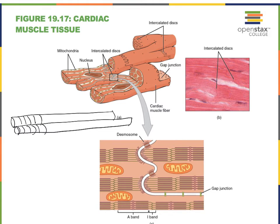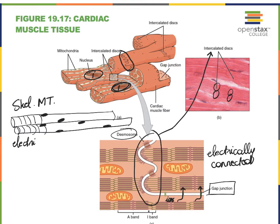Skeletal muscle cells on the other hand are said to be electrically isolated. That means if depolarization occurs in one skeletal muscle cell, that depolarization only spreads throughout that fiber — it will not make it into the next muscle fiber. This is one of the reasons why each and every skeletal muscle cell needed its own axonal terminal, because these cells are electrically separate. Not the case for heart muscle, because if one cell is triggered the next cell can be triggered as well.